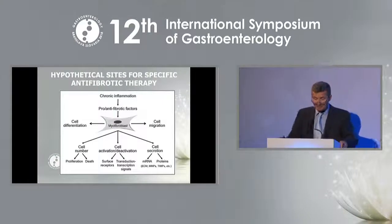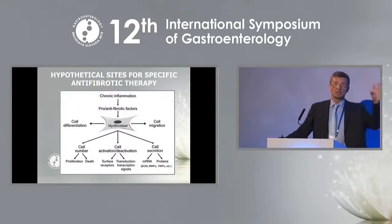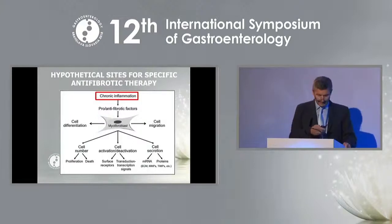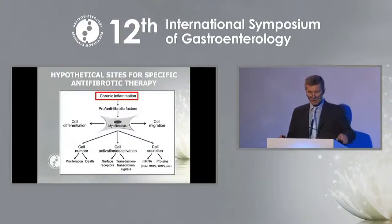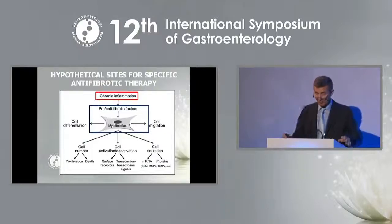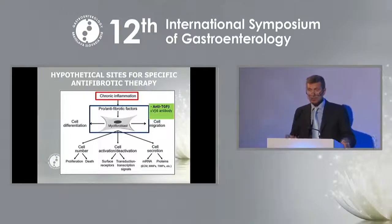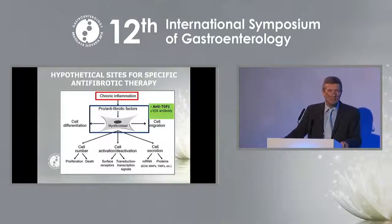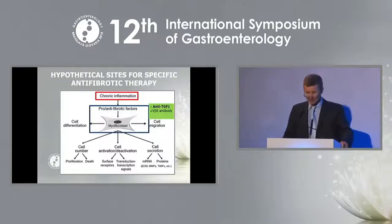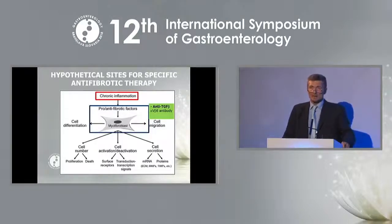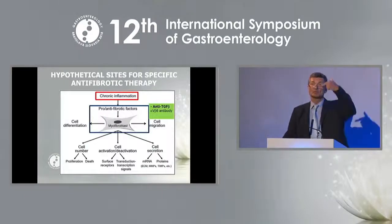Hypothetical sites for specific antifibrotic therapy — distinct from anti-inflammatory therapy — are depicted in a schematic. Currently we focus on resolving chronic inflammation. A direct antifibrotic agent impact is not yet available but seems promising for the future. Another approach is anti-integrin therapy targeting integrins expressed on the surface of myofibroblasts — specifically alpha-V beta-6 — which when blocked reduces TGF-beta-1 stimulation. This may be a potential specific target for intestinal fibrosis therapy.